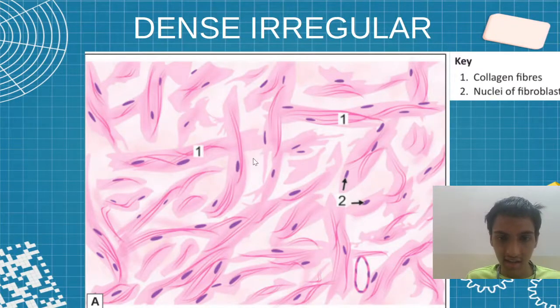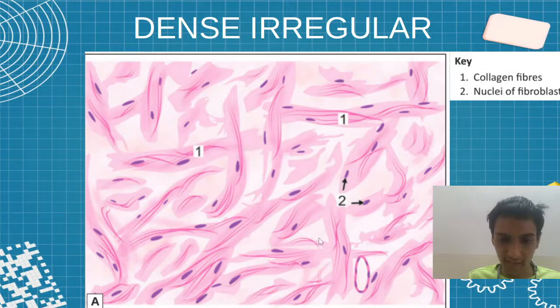For irregular, it will be like this. Up, down, left, right like this. Very irregular drawing, ok.